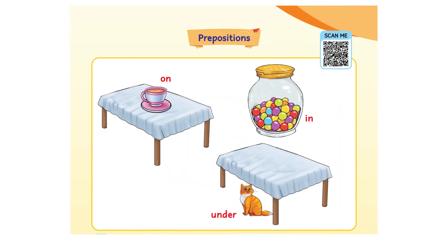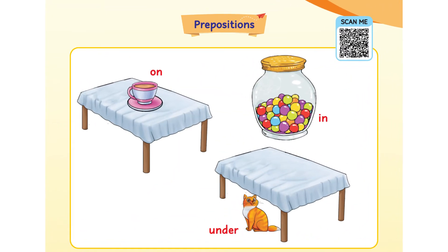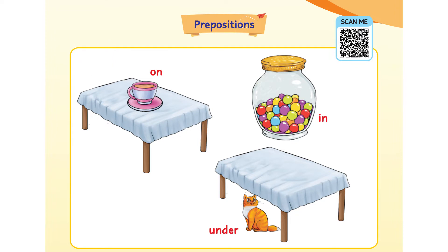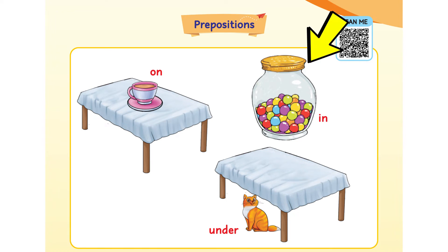Proposition. Look at the given pictures. Where is the cup? It is on the table. Where is the cat? It is under the table. Where are the beans? They are in the bottle or in the jar.